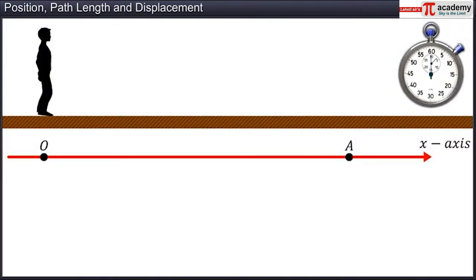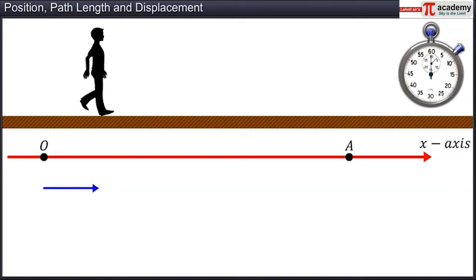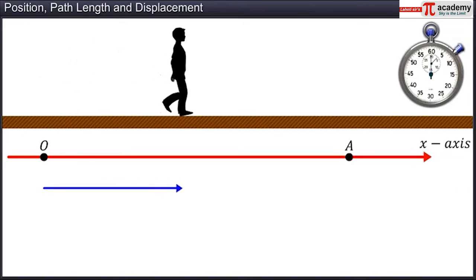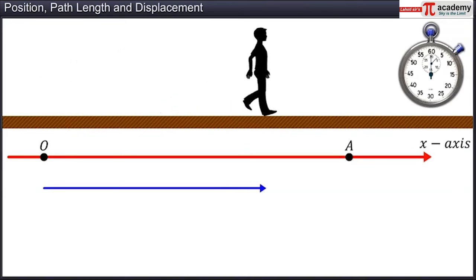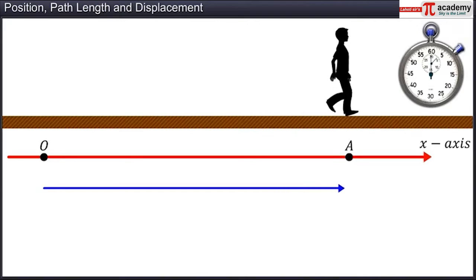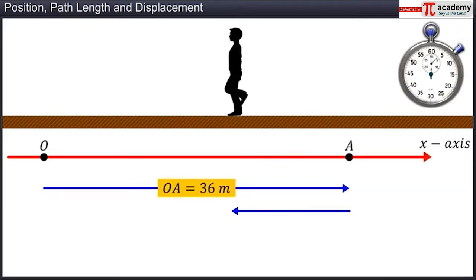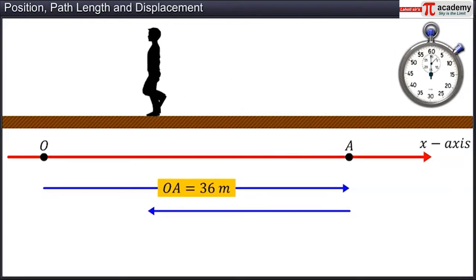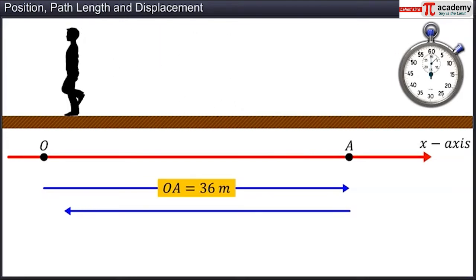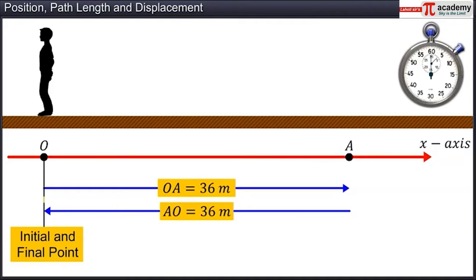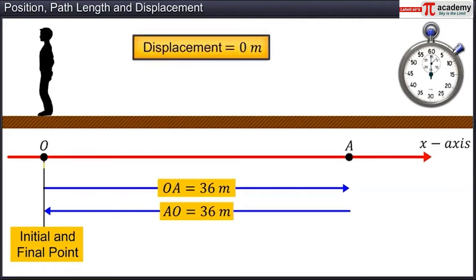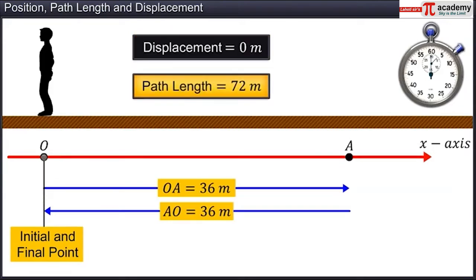There may be cases where the displacement of an object may be zero even though it has moved, but its path length will not be zero. For example, the man starts from O, goes to A, and comes back to O. The final and initial position of the man being the same, his displacement is zero. However, the path length of his journey is 72 meters.